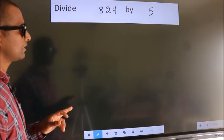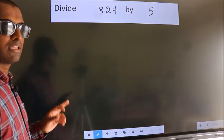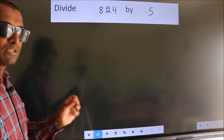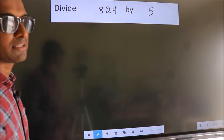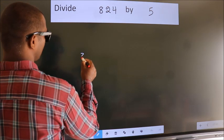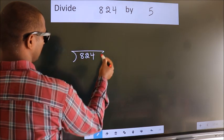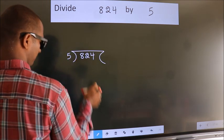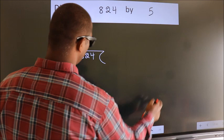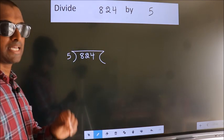Divide 824 by 5. To do this division, we should frame it in this way. 824 here, 5 here. This is your step 1.